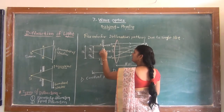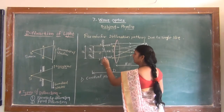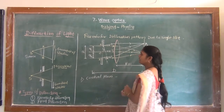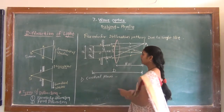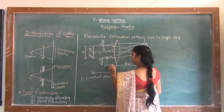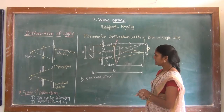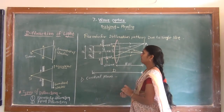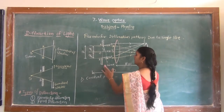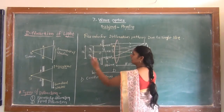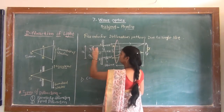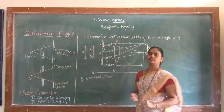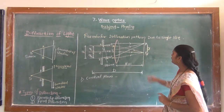From the geometry, here this is our angle theta, and we know that BN is nothing but d·sinθ, as we have already discussed in the previous lecture. The path difference is A·sinθ, where A is the slit width. So the path difference equals A·sinθ.